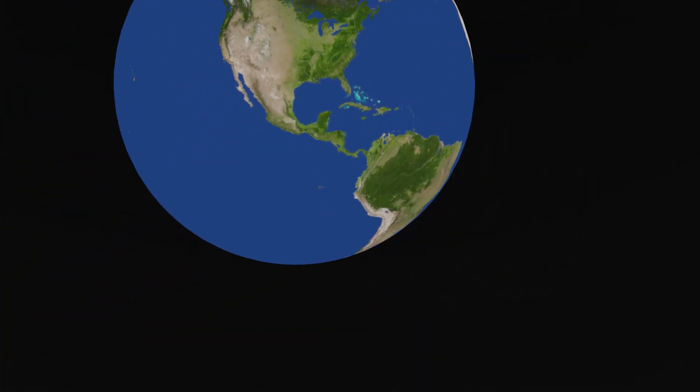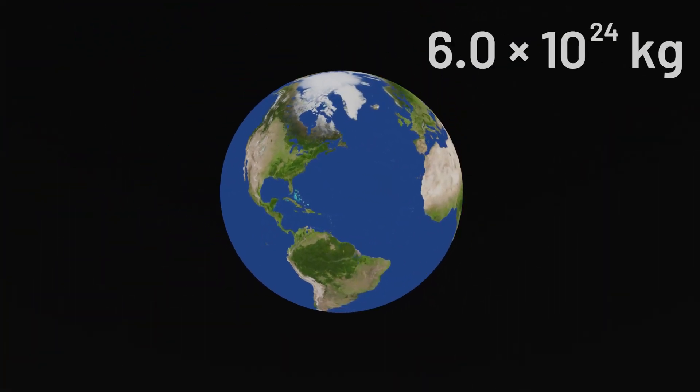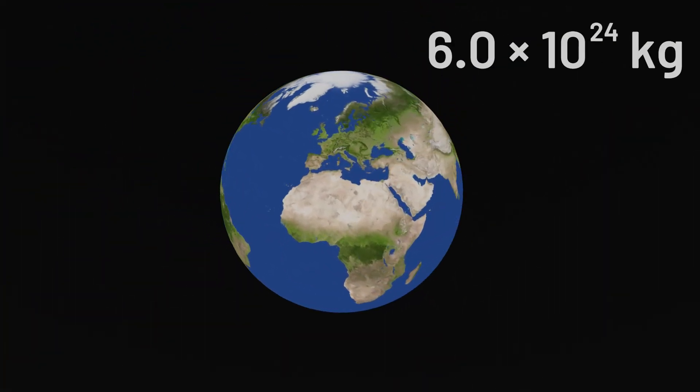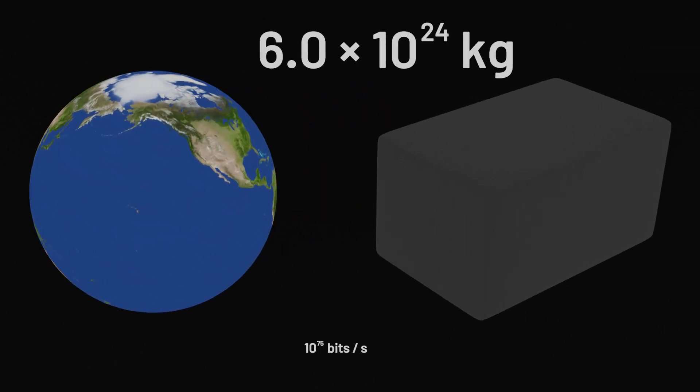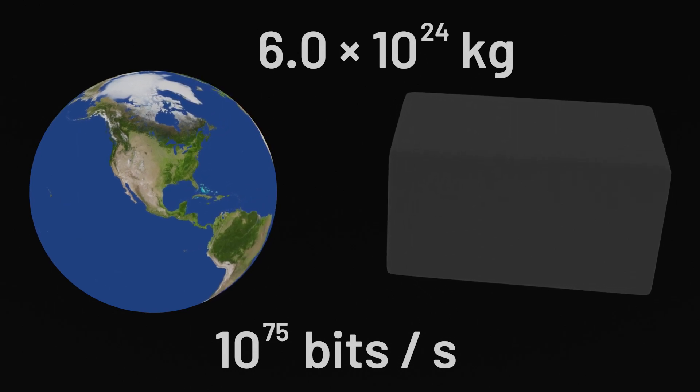The Earth, for example, is about 6 times 10 to the 24 kilograms. So a computer the size of the Earth could process no more than about 10 to the 75 bits per second.